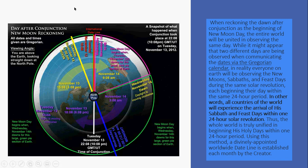When reckoning the dawn after conjunction as the beginning of the new moon day, the entire world will be united and observing the same day. While it might appear that two different days are being observed when communicating the dates via the Gregorian calendar, in reality everyone on Earth will be observing new moons, Sabbath, and feast days during the same solar revolution, each beginning their day with the same 24-hour period. All countries of the world will experience the arrival of the Sabbath and feast days within one 24-hour solar revolution. Thus the whole world is truly unified in beginning his holy days within one 24-hour period. Using this method, a divinely appointed worldwide dateline is established each month by the Creator.